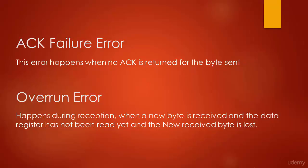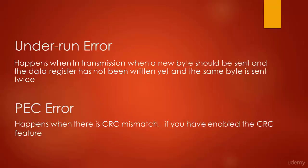Overrun error happens during reception when a new byte is received but the data register has not been read yet, causing the new received byte to be lost — so at least one byte is lost whenever overrun occurs. Underrun error happens during transmission when a new byte should be sent but the data register has not been written yet, causing the same byte to be sent twice. In I2C, the clock stretching feature allows us to easily prevent both overrun and underrun errors.